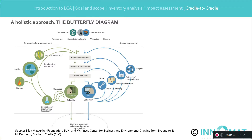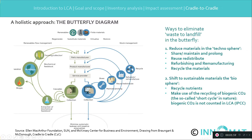Our technosphere tends to be more linear — that is to say that we manufacture products and discard them when we do not need them anymore. Such behavior creates a lot of waste and depletes our Mother Earth. The so-called circular economy must stop this behavior. The main activities to eliminate waste according to the butterfly are: share, maintain and prolong, reuse and redistribute, refurbishing and remanufacturing, and finally recycle the materials.